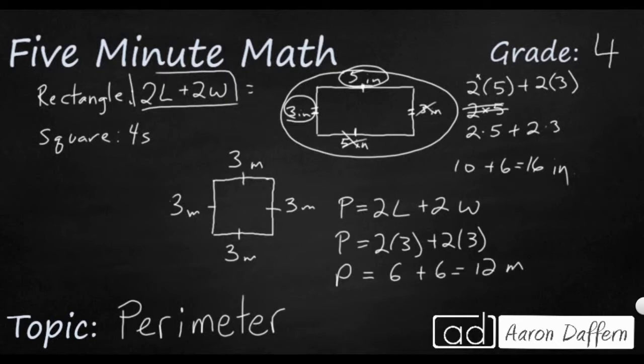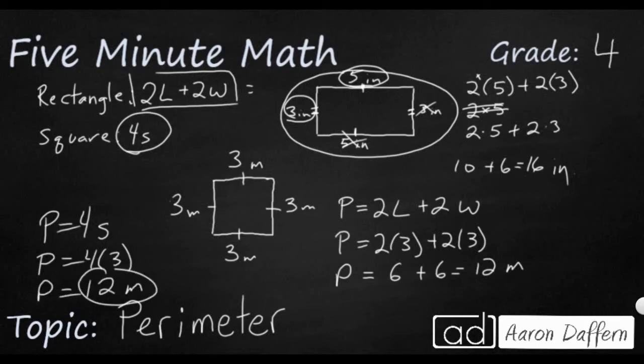You notice we have a simpler one, 4S. The S simply means the side. Perimeter equals 4S. My side is going to be 3. So I'm just looking at 4 times 3 and guess what I have. My perimeter is 12 meters. Same thing, just a little bit simpler.